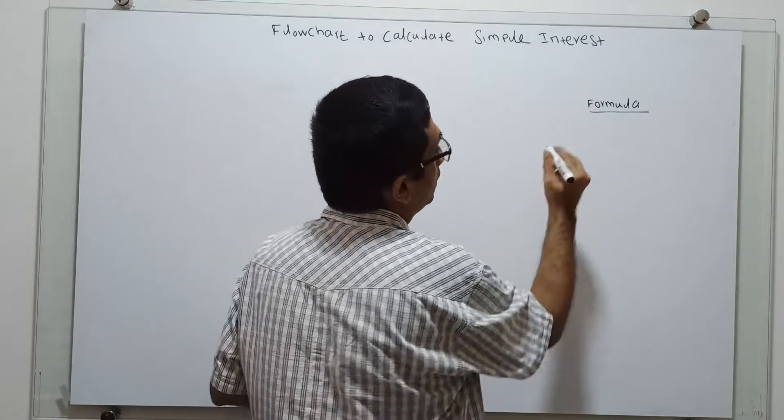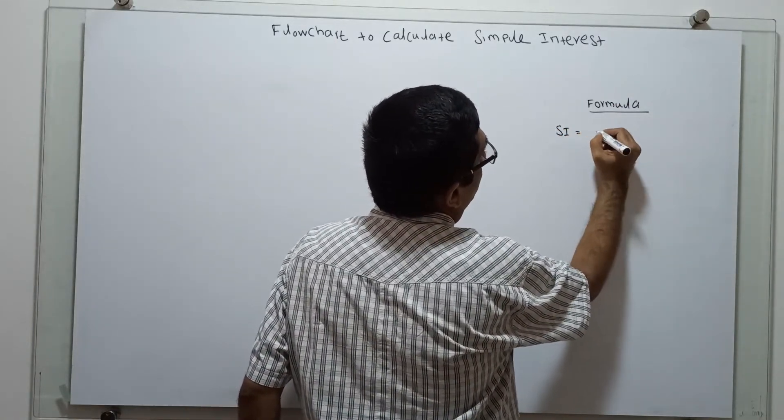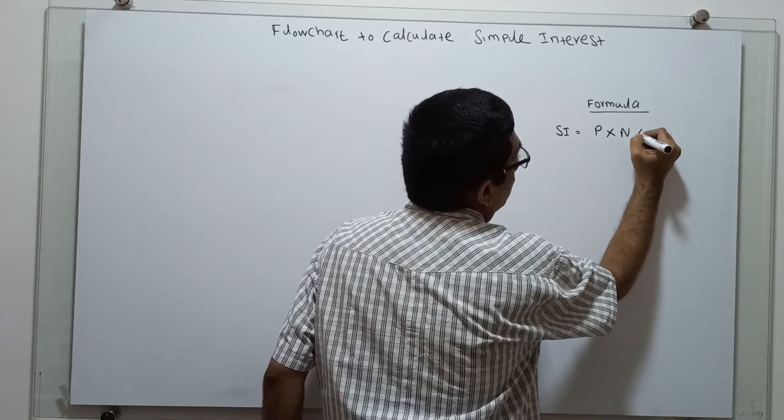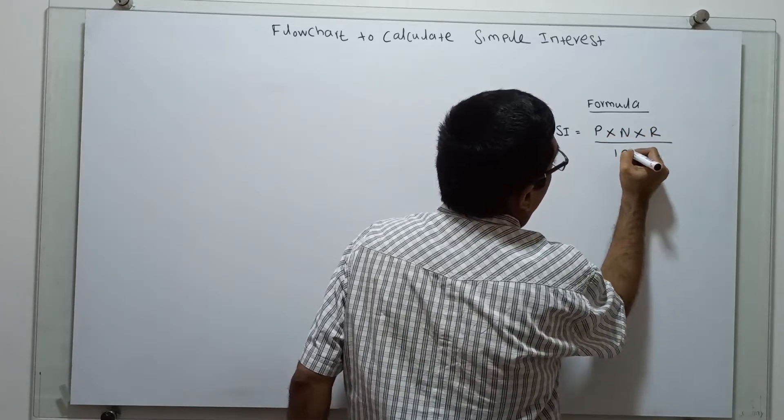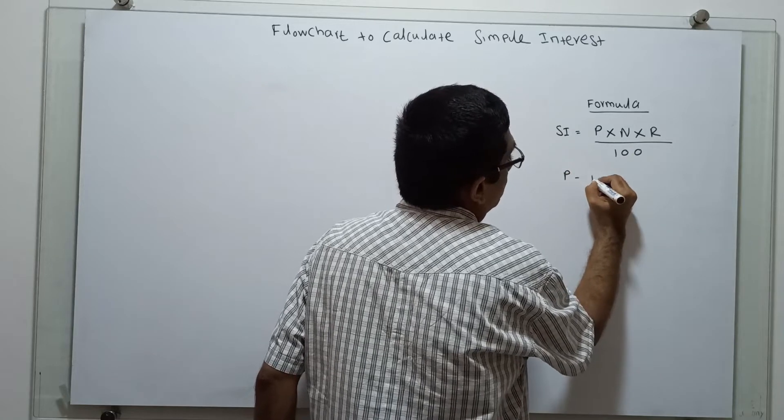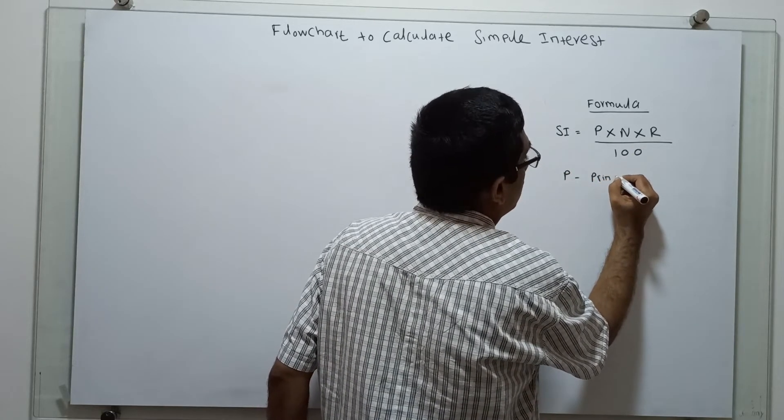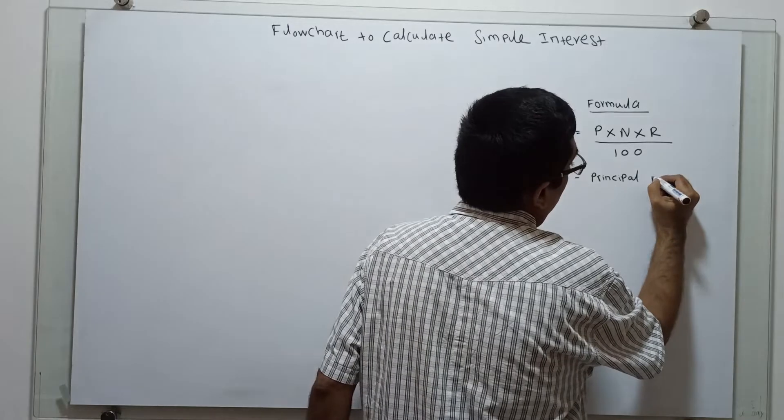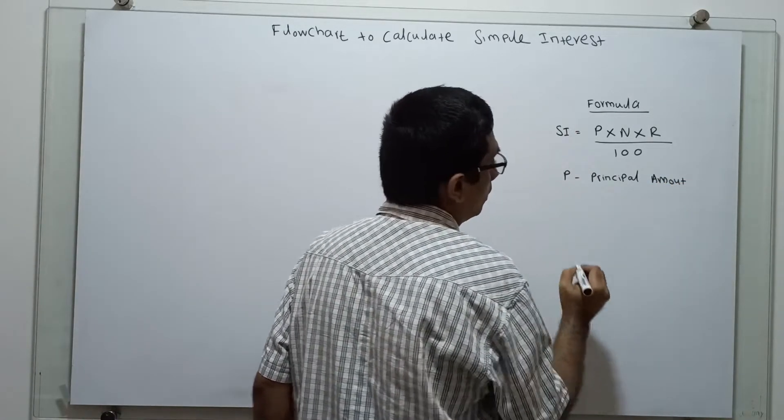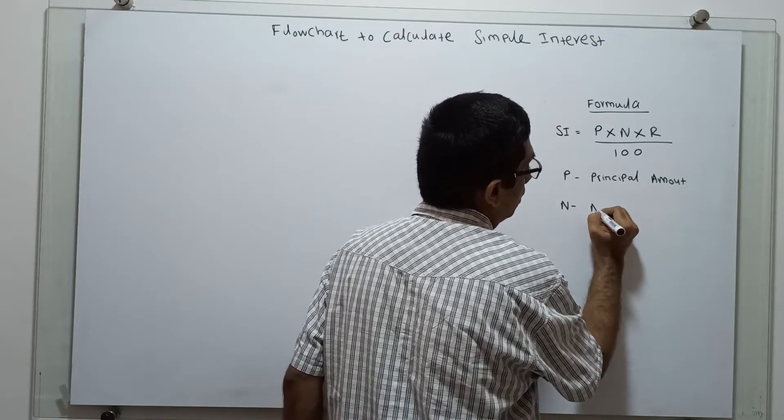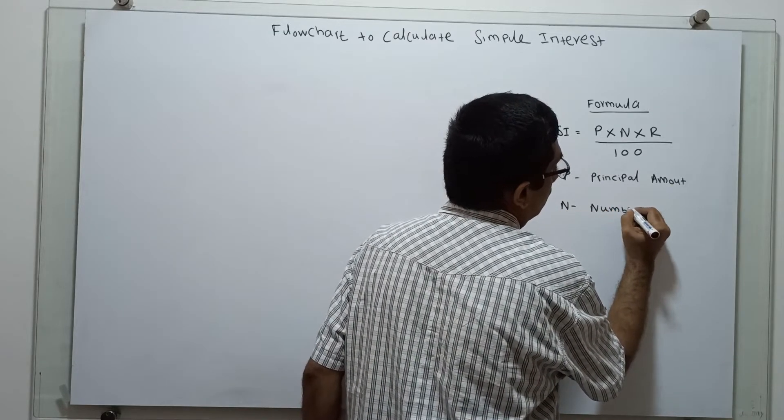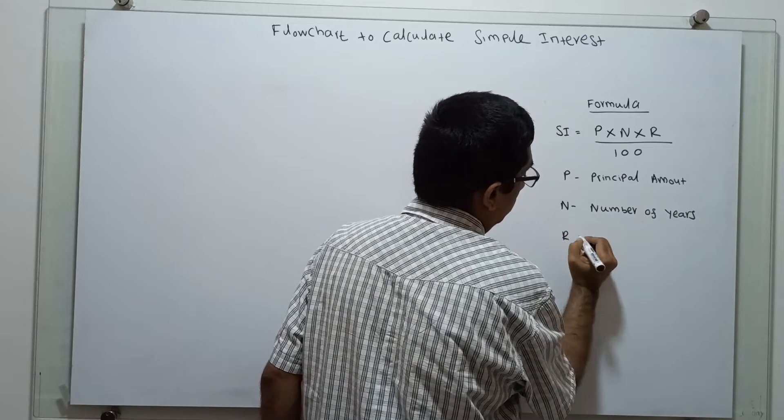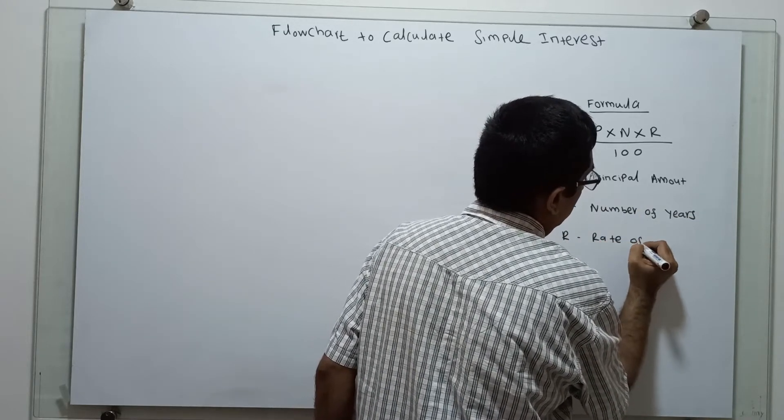We can say SI is the simple interest. The formula is P into N into R divided by 100. P stands for the principal amount. N stands for number of years. R stands for rate of interest.